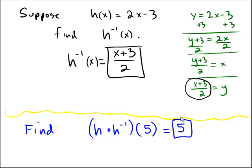We can verify that in this function up above. If we try to figure out what is h inverse of 5, well, h inverse of 5 would be equal to 5 plus 3 over 2. 5 plus 3 is 8. 8 divided by 2 is 4.